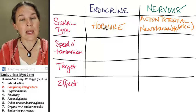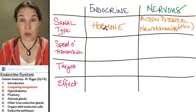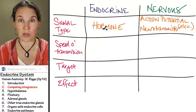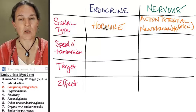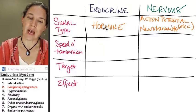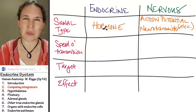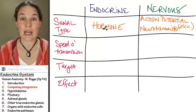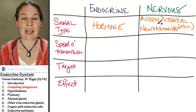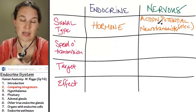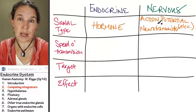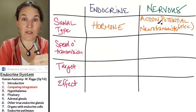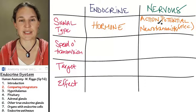A hormone is also a chemical, so neurotransmitters and hormones are both chemicals. But the hormone is released into the bloodstream. That's the definition of a hormone: it is a chemical that is dumped into the blood and travels through the bloodstream to affect a distant target.